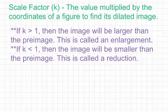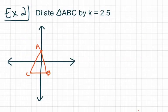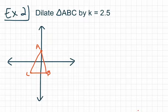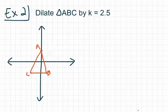For our second example, we're told to dilate triangle ABC by a scale factor of k equals 2.5. The easiest approach is to write down the coordinates for all three points, then multiply each value of the ordered pairs by 2.5 to get the prime points. Once you have the coordinates of the prime points, go ahead and plot those. Let's write down all the points along with their coordinates.